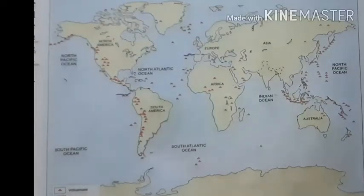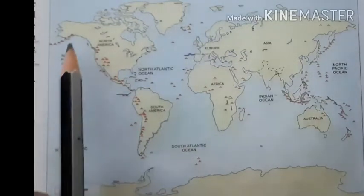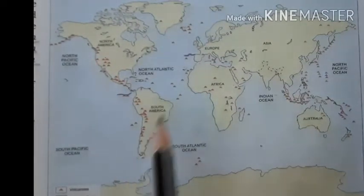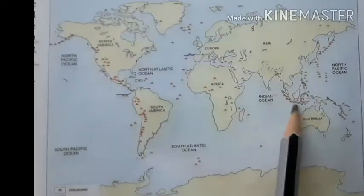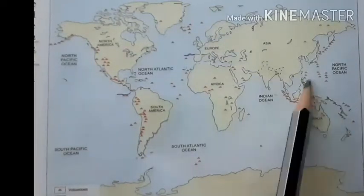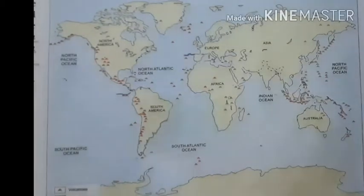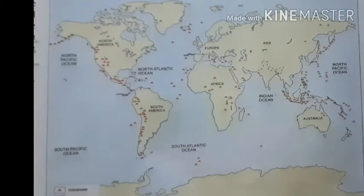This map shows the world distribution of volcanoes. You can find the boundaries of the tectonic plates here, and these volcanoes are also located along the boundaries of the tectonic plates all over the world. There are two different areas for the location of this volcanic belt.